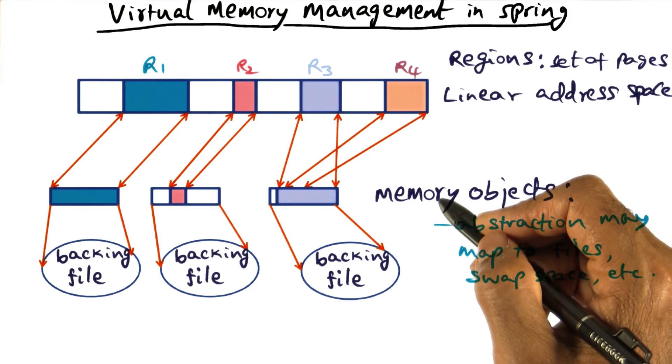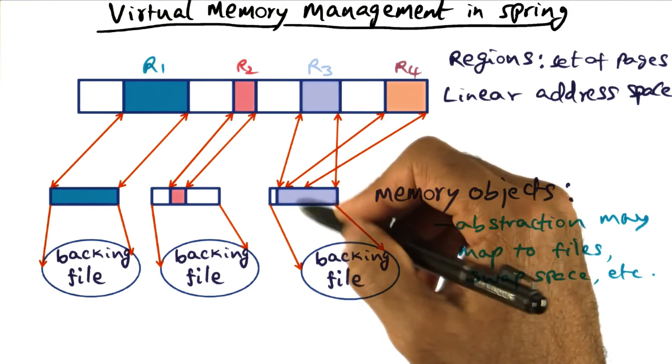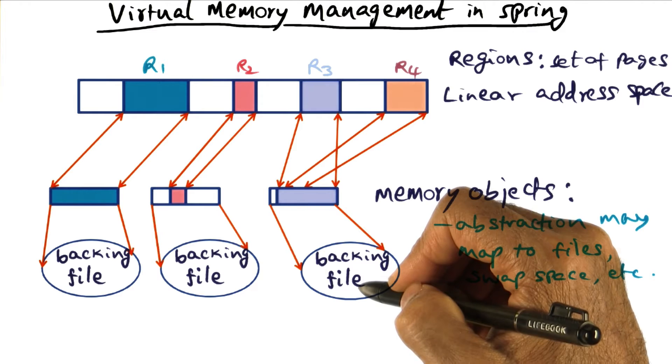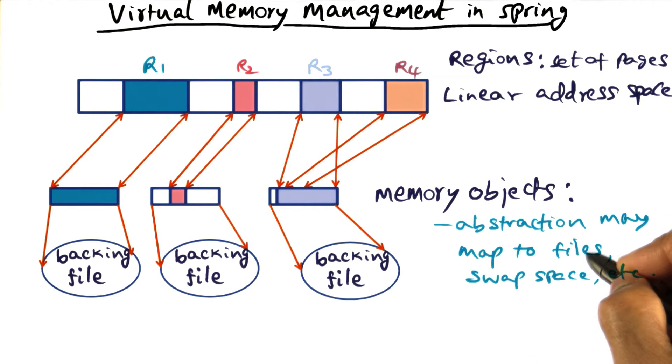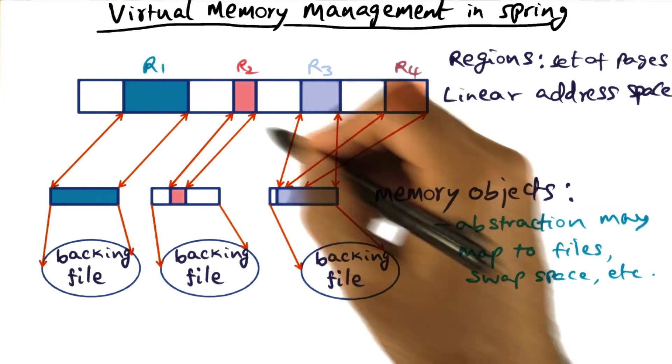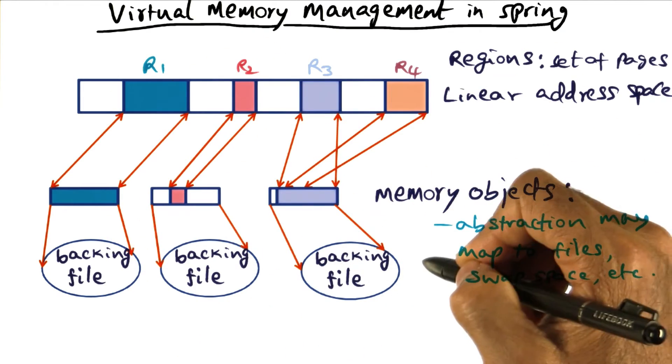So this memory object is the mechanism by which portions of the address space can be mapped to different entities, which may be on the disk as swap space, or files in a file system. All of those are available through this abstraction of a memory object, so that regions in an address space can be mapped to these backing entities.